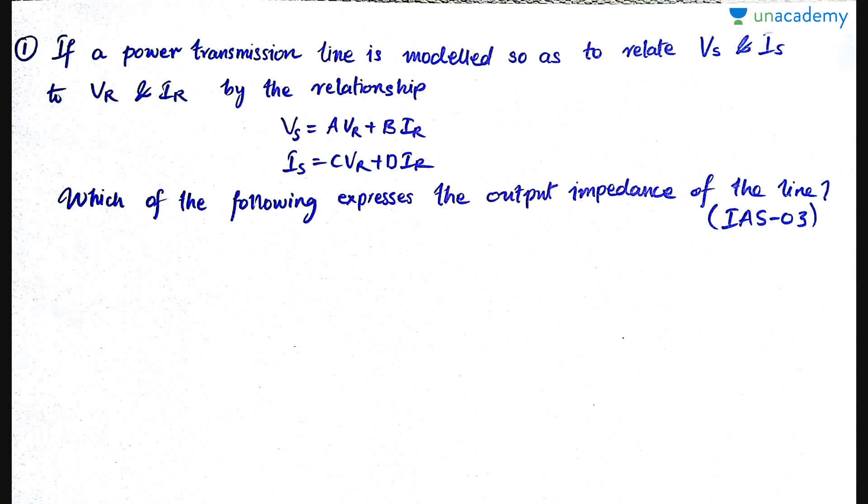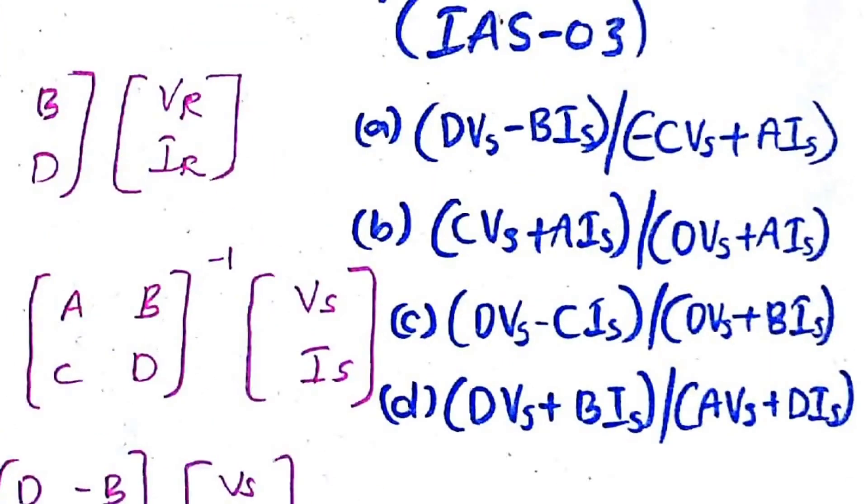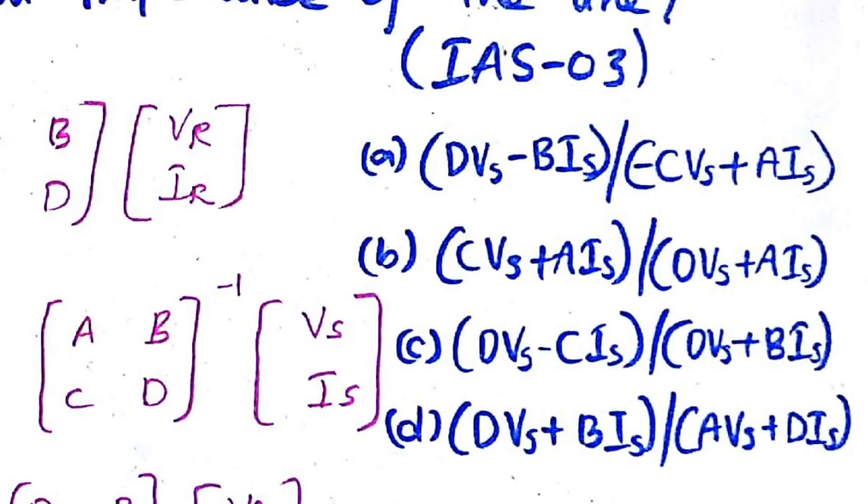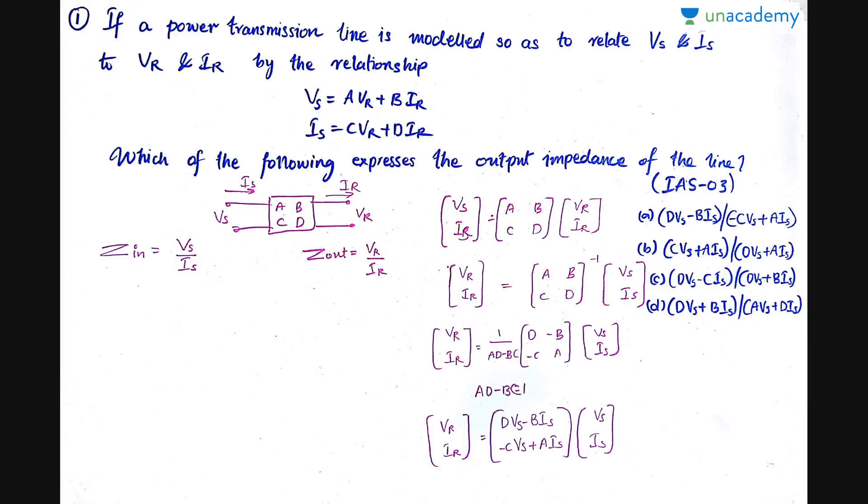So the first problem is - if a power transmission line is modeled so as to relate Vs and Is to Vr and Ir by the relationship: Vs equals A·Vr plus B·Ir, Is equals C·Vr plus D·Ir, which of the following expresses the output impedance of the line? It was asked in IAS 2003. These are the options. Please note down the question and try to do the answer on your own.